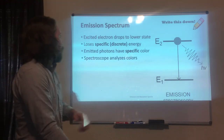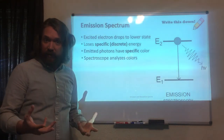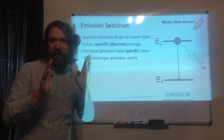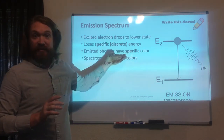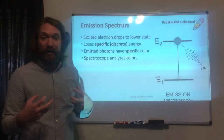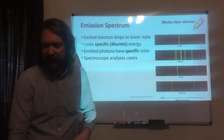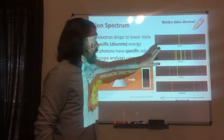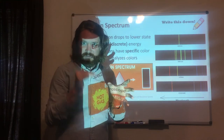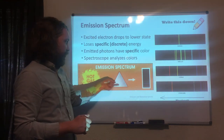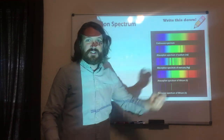In an emission spectrum, you have a high energy level and a low energy level. When an electron jumps from a high energy level to a low one, it loses energy and spits out light. That lost energy is a discrete — meaning specific — amount. Emitted photons have a specific color, which is the same as the energy they absorbed. We can use spectroscopes to analyze those colors and tell you, for example, that a star is made up of 95% helium and 4% hydrogen. Emission spectra have more black and less color because only a small sliver of light is emitted when the electron jumps down.